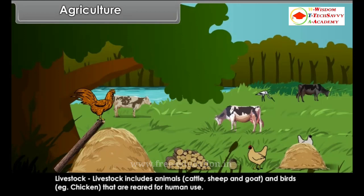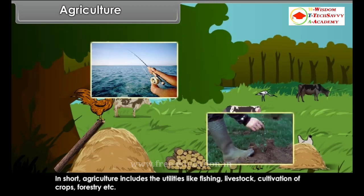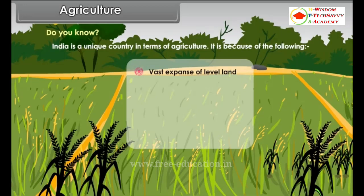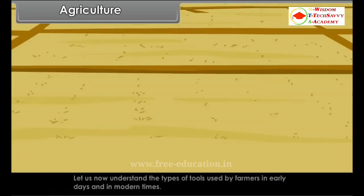Livestock includes animals like cattle, sheep and goat, and birds such as chicken, that are reared for human use. In short, agriculture includes utilities like fishing, livestock, cultivation of crops, forestry, etc. India is a unique country in terms of agriculture because of its vast expanse of level land, rich soils, wide climatic variations, ample sunshine and long growing season.